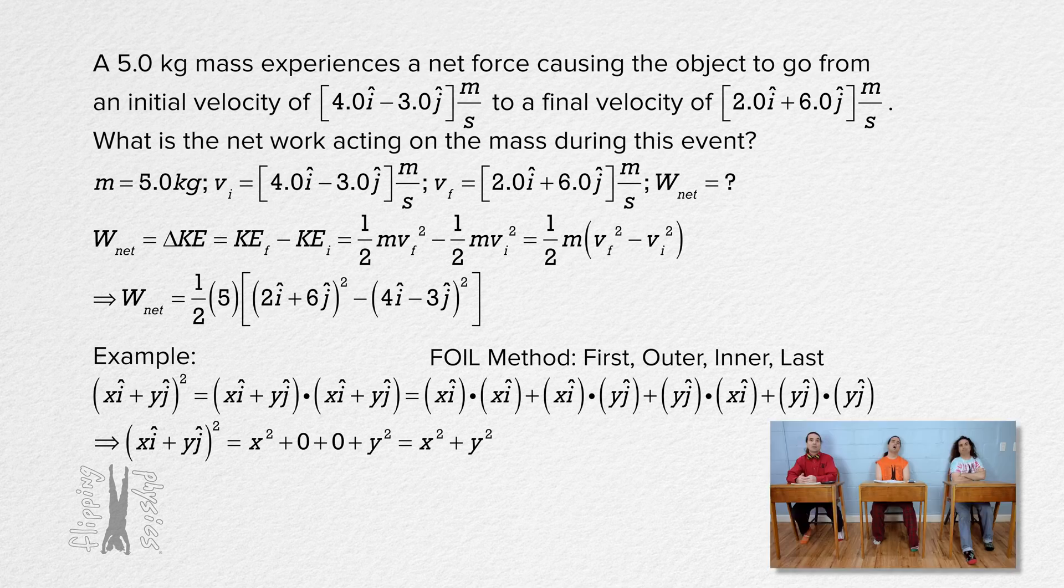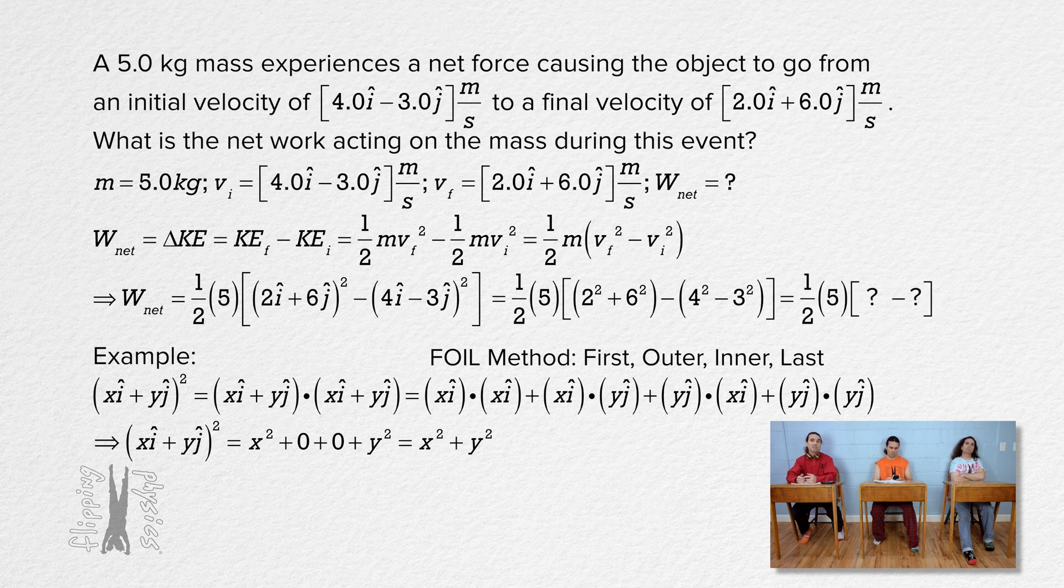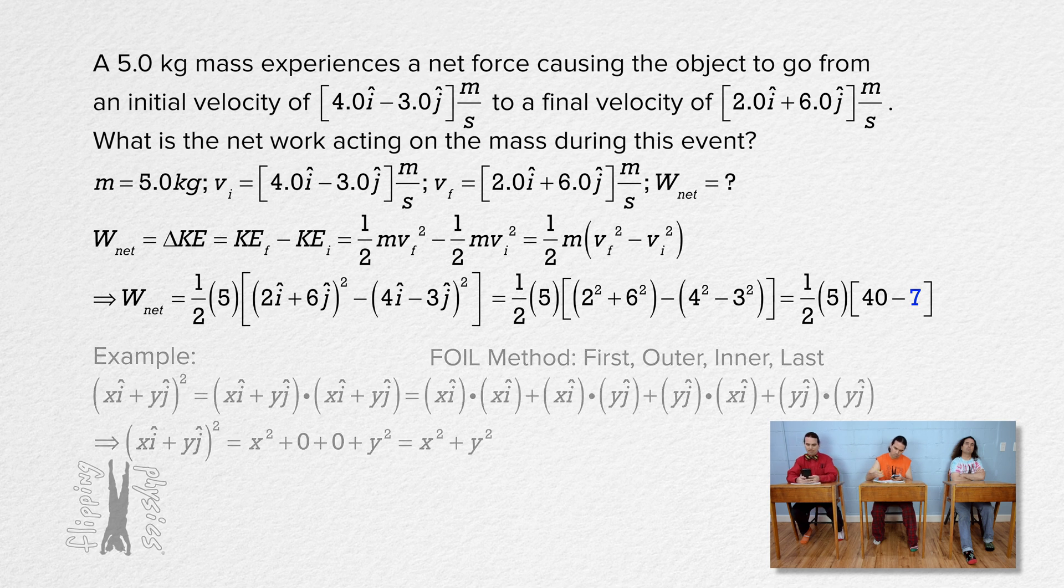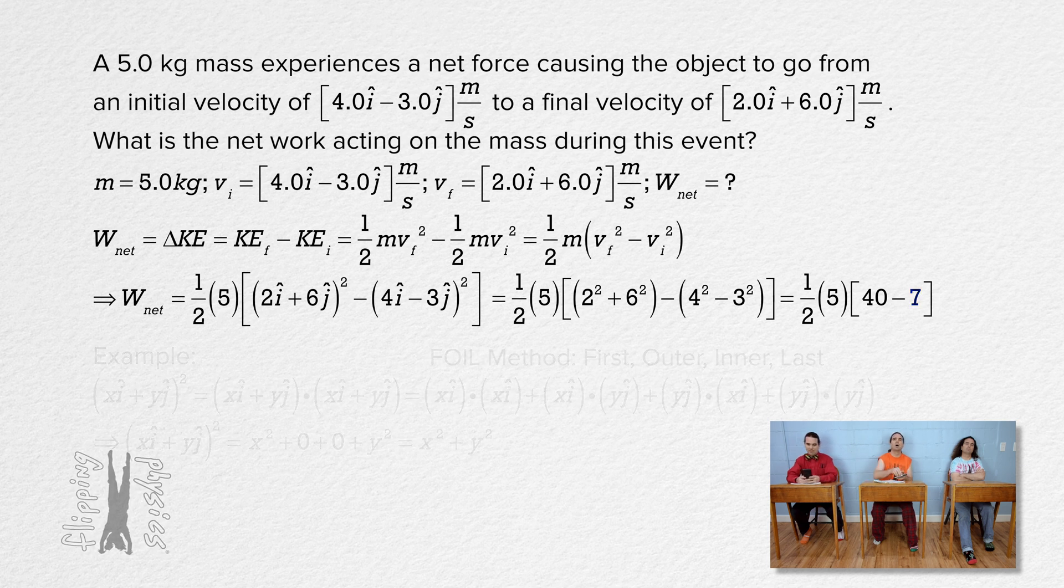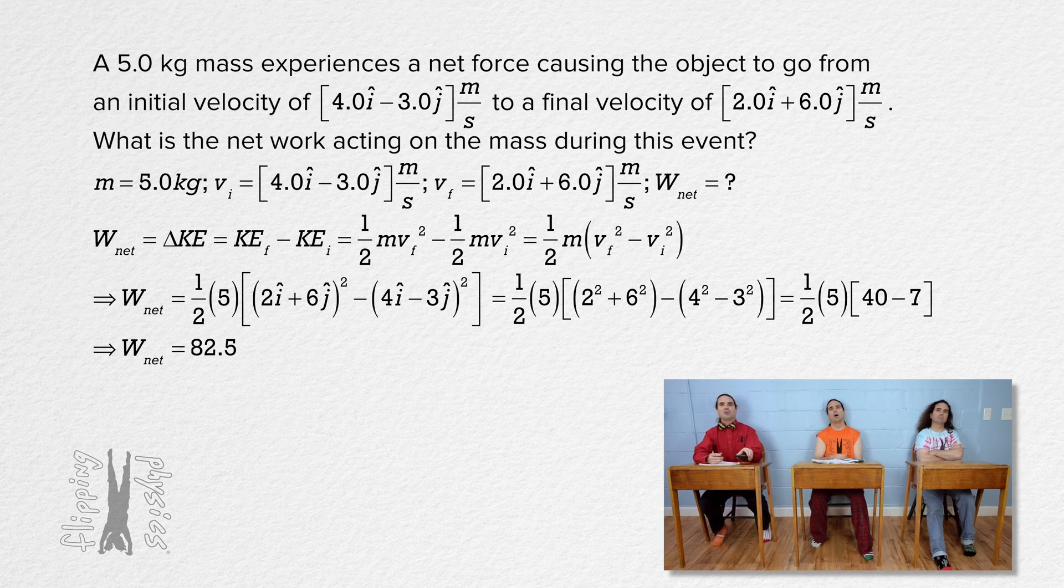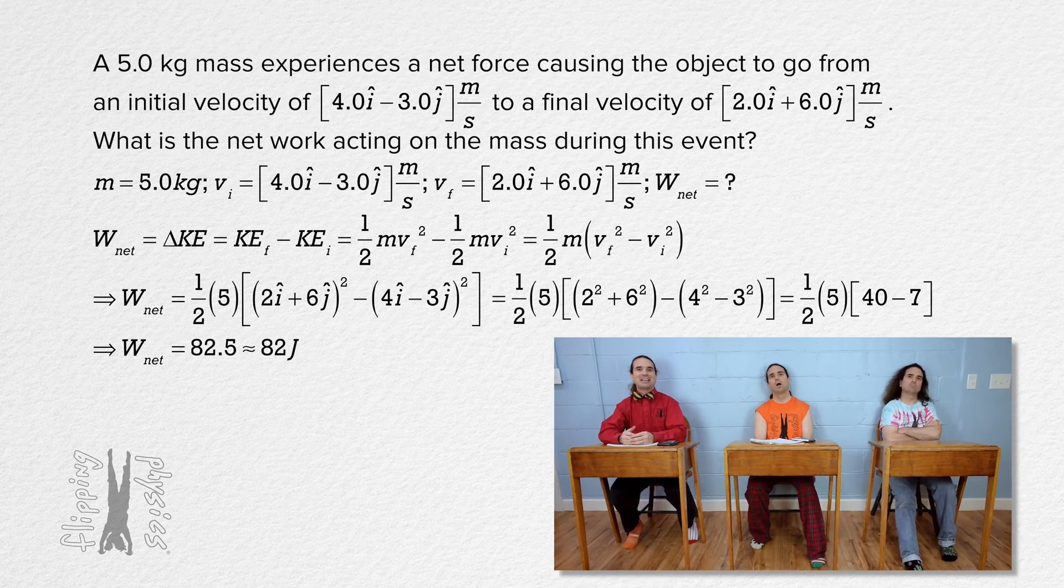Alright, Billy please finish the problem. Absolutely. The network then equals 1 half times 5 times the quantity 2 squared plus 6 squared minus the quantity 4 squared minus 3 squared. That equals, well, 1 half times 5 times the quantity 4 plus 36 or 40 minus the quantity 16 minus 9 or 7 and that equals 82.5 or 82 joules with two sig figs. I love the arcane rounding rule.